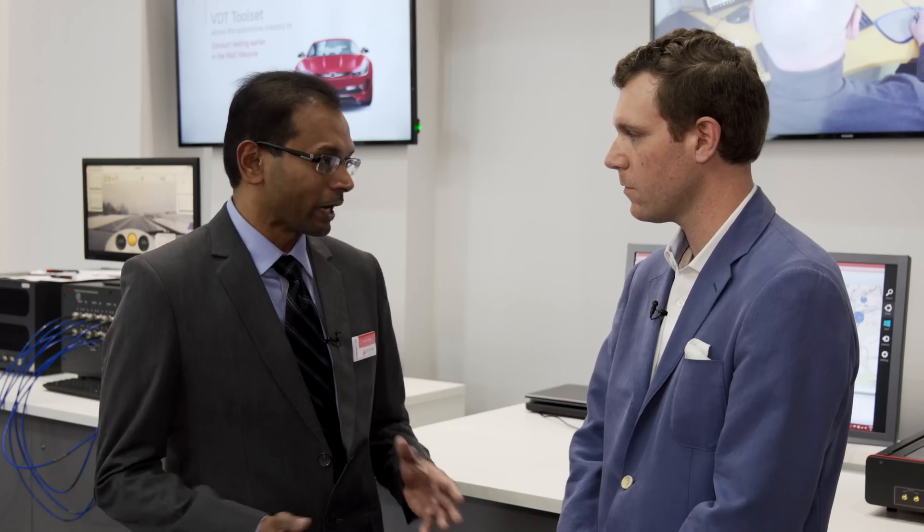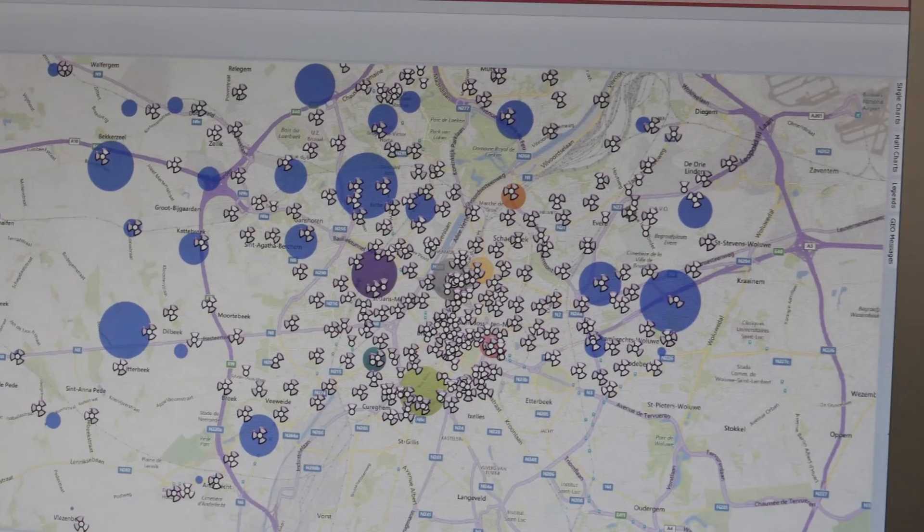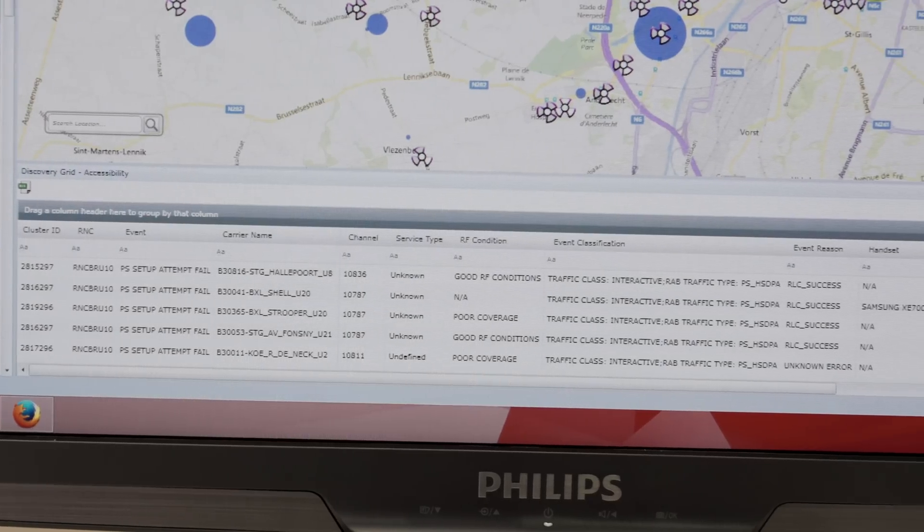By having this combined platform where we've added the Geospatial Intelligence, not only are they able to combine these data sources and get more value out of the analytics, they can also geolocate them so that they will actually see where these users are experiencing problems. That adds significant value to the ability to improve the quality of the experience.